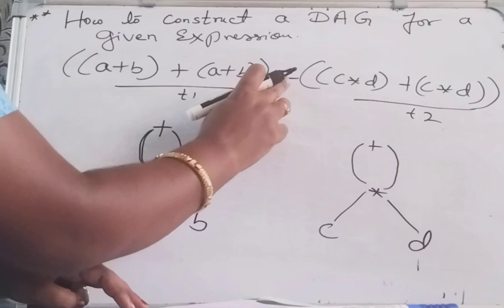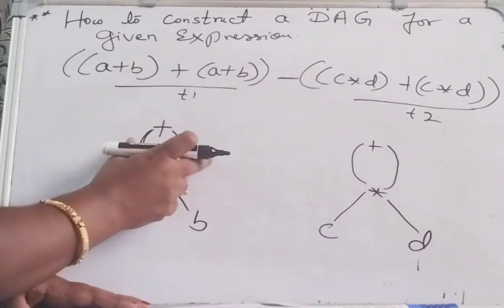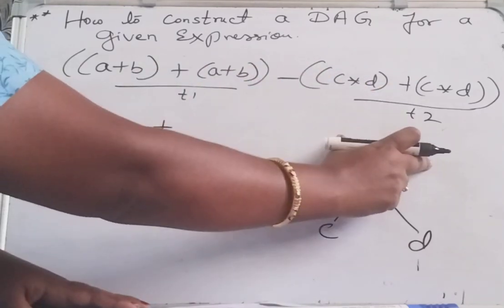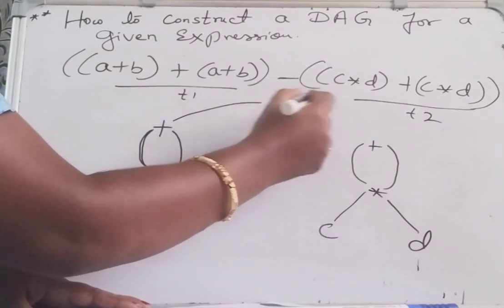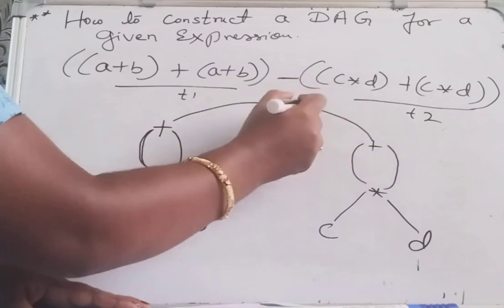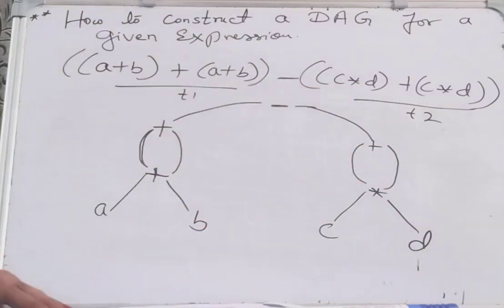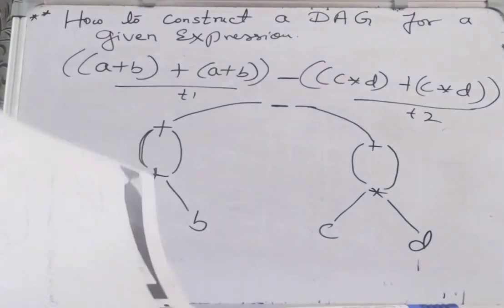Then this minus this one. So this result is here, and this is T2. This is T1. The whole here, see I put minus sign here, the whole part. This is minus. So this is the construction of the DAG for this given expression.